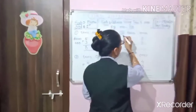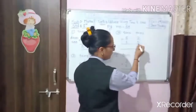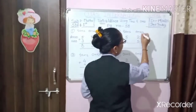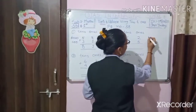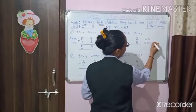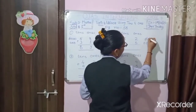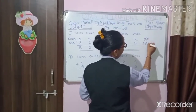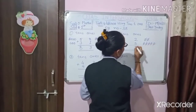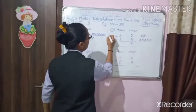Now number 2: 52 plus 15. So we have to add only the 1s place number. Count together: 2, 3, 4, 5, 6, 7. We have to write here 7.